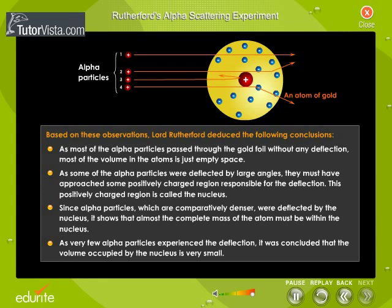Based on these observations, Lord Rutherford deduced these conclusions. As most of the alpha particles passed through the gold foil without any deflection, most of the volume in the atoms is just empty space. As some of the alpha particles were deflected by large angles, they must have approached some positively charged region responsible for the deflection. This positively charged region is called the nucleus.